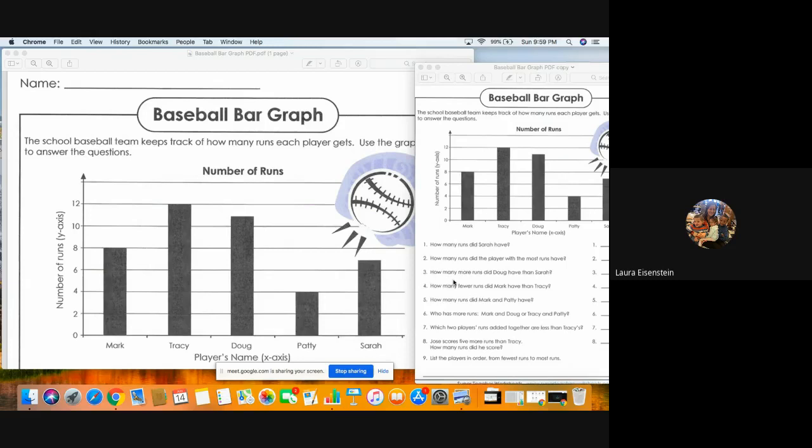Number three, how many more runs did Doug have than Sarah? So we know that that's a more than problem. With more than or less than problems, your step one is to figure out how many does each one have. And then your second step is to subtract. You do big number take away little number. And then whatever your answer is, that's the difference. That's how many more or how many less than.